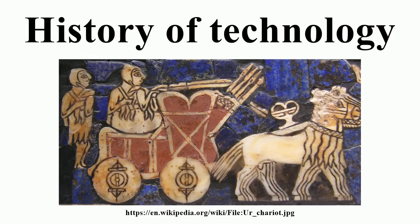Morgan's concept of three major stages of social evolution can be divided by technological milestones, such as fire. White argued the measure by which to judge the evolution of culture was energy. For White, the primary function of culture is to harness and control energy.